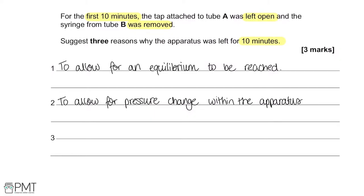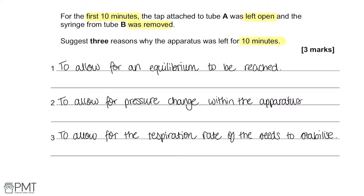For our third and final reason, we can relate our answer to how the respiration rate of seeds changes over time. We know that with any organism, over a period of time, the respiration rate will not only change but will adapt to its conditions. Now that we've left the apparatus for 10 minutes, the respiration rate of the seeds would have increased because we've introduced oxygen to them. So we can say that within those 10 minutes, we're allowing the respiration rate of the seeds to stabilize before we start to take our measurements.